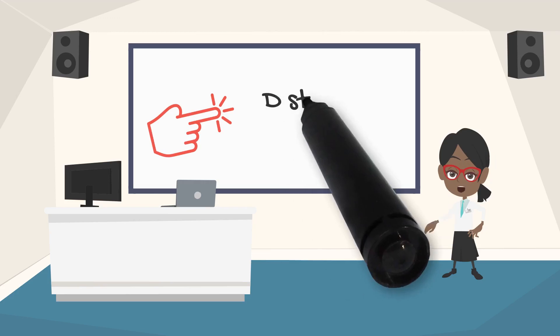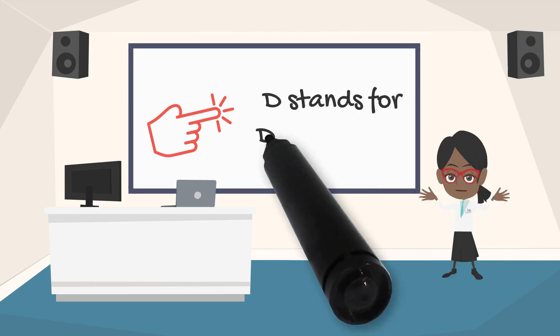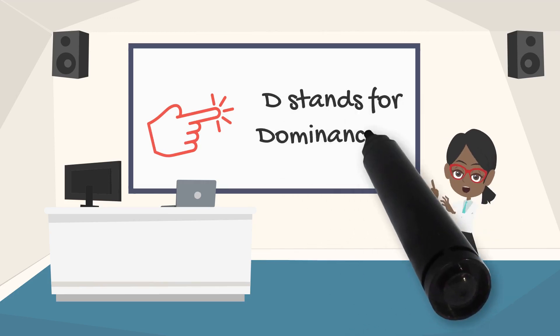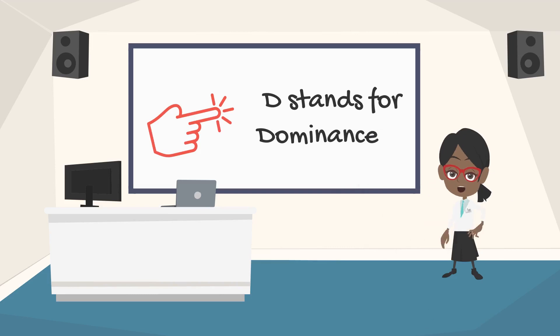The D stands for dominance. This is how you approach and respond to problems and challenges. The higher the D score, the more aggressively you take on the challenge. The lower D is more reflective when it comes to problems and challenges.